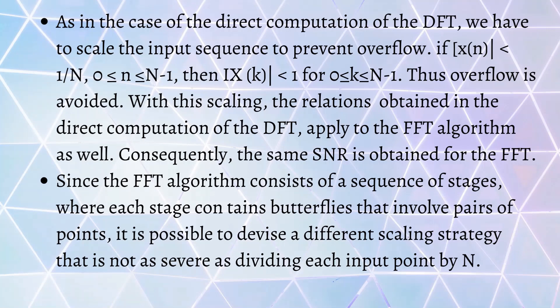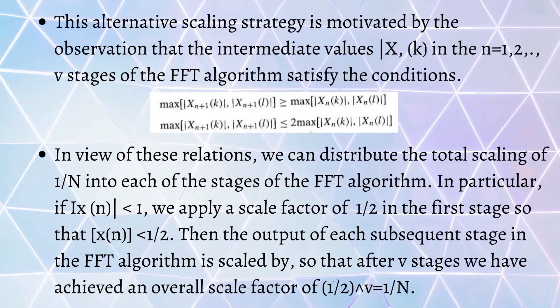Since FFT algorithm consists of a sequence of stages where each stage contains butterflies that involve pairs of points, it is possible to devise a different scaling strategy that is not as severe as dividing each input point by N. In fact, this alternate scaling strategy is motivated by the observation that intermediate values, the magnitude of X(k) in the ν=1 to V stages of FFT algorithm, satisfy certain conditions.